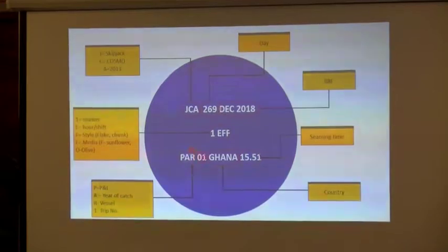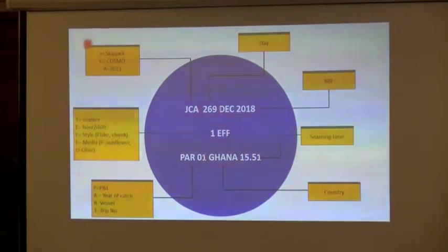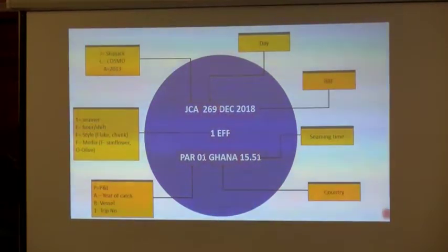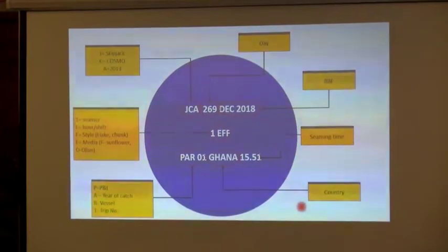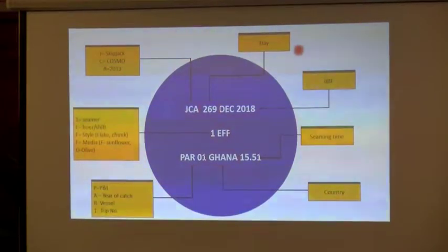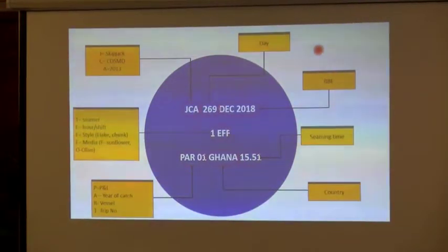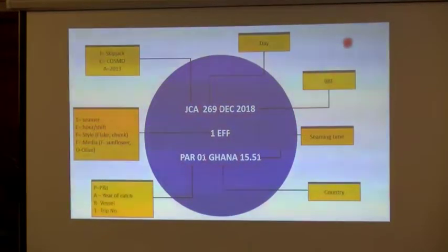That's an example of an internal traceability system. As inspectors, we have a right to ask business operators to share their traceability coding system so that we can read this data and understand whether they have taken sufficient steps to ensure traceability. One of the key questions we need to ask is: what is your coding system and what does it mean?